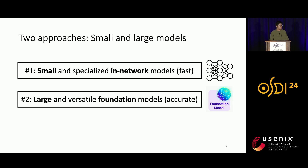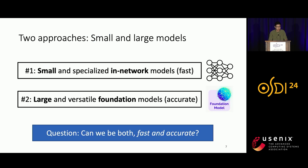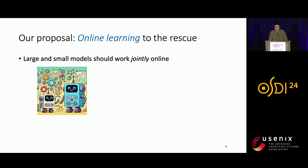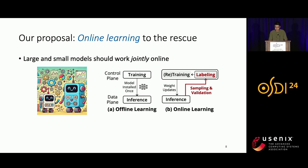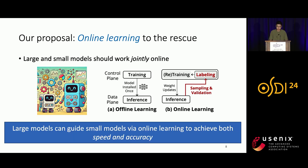We've seen two different approaches to machine learning-based network traffic analysis: the first uses small and specialized in-network models, which is fast; the second uses large and versatile foundation models, which is accurate. The question we want to ask is simple: can we have the benefits of both — can we be both fast and accurate at the same time? The answer is yes. We propose that large and small models should work jointly online through a technique called online learning, where the small model is periodically retrained with fresh data so it can better adapt to changing traffic dynamics. We claim that large models can guide small models via online learning to achieve both speed and accuracy.